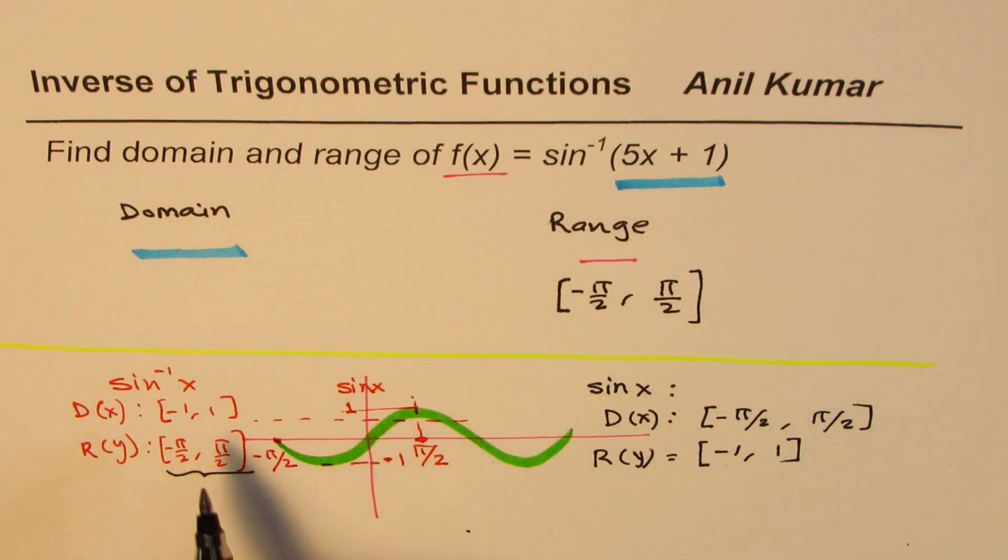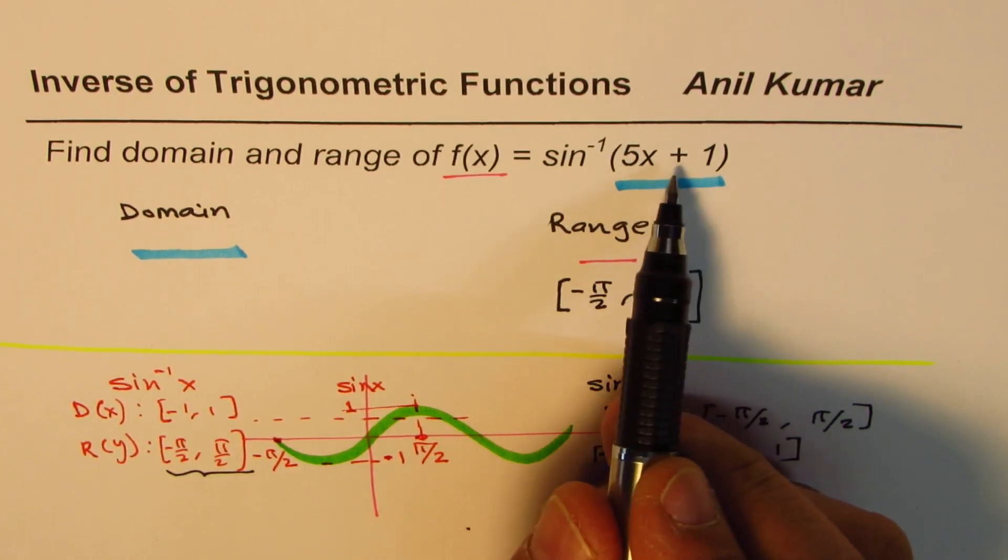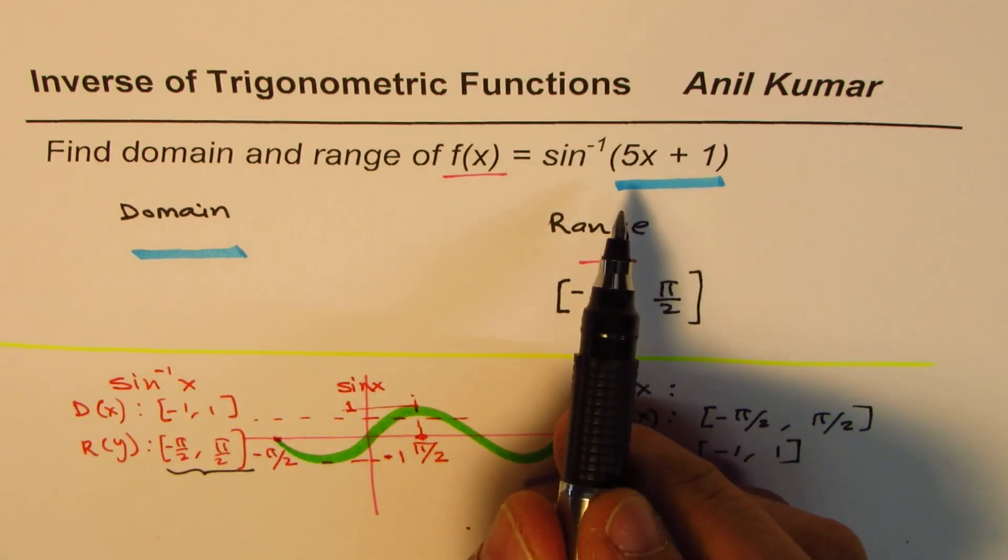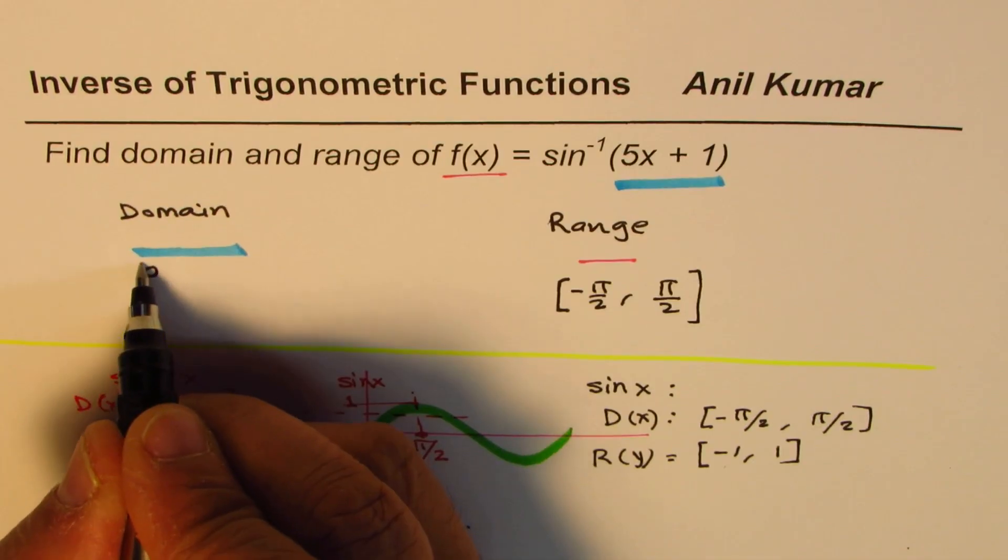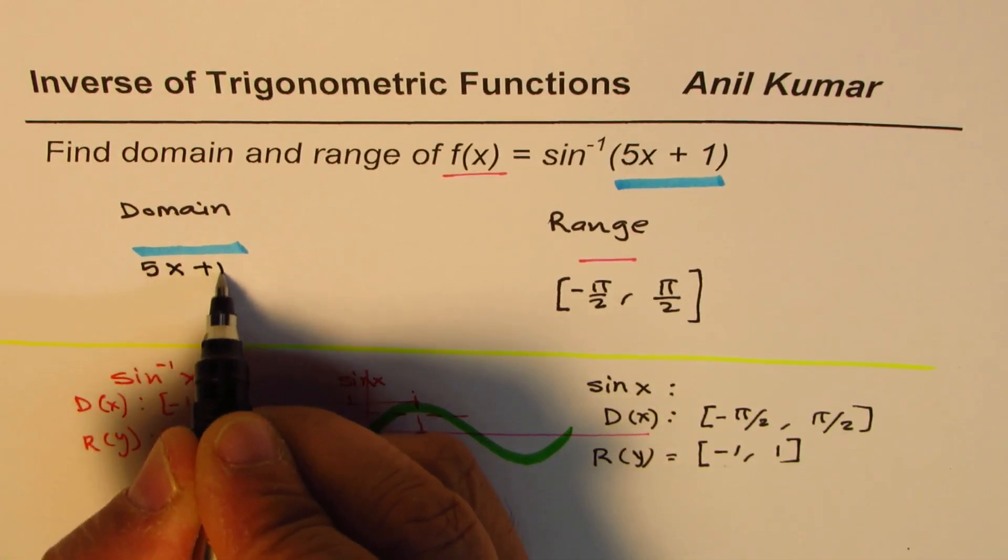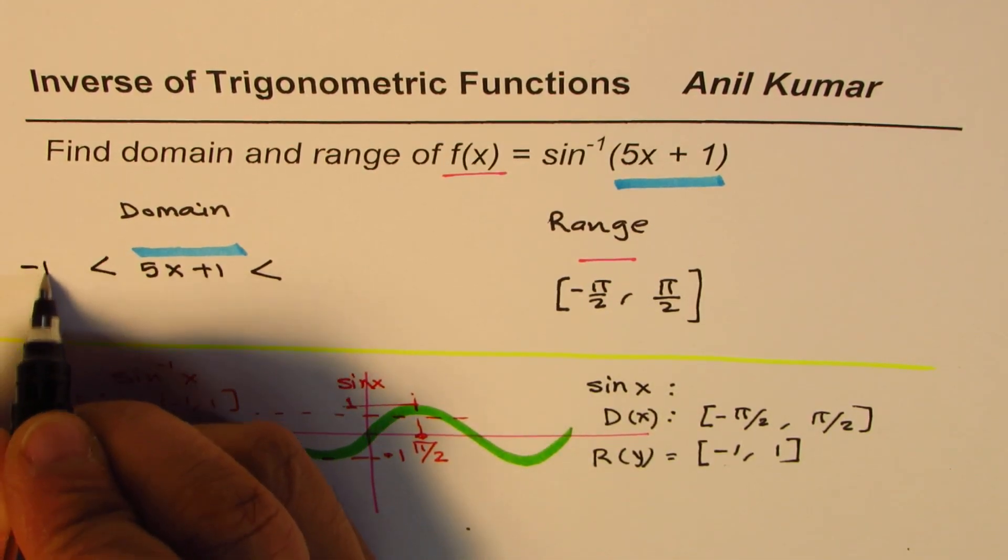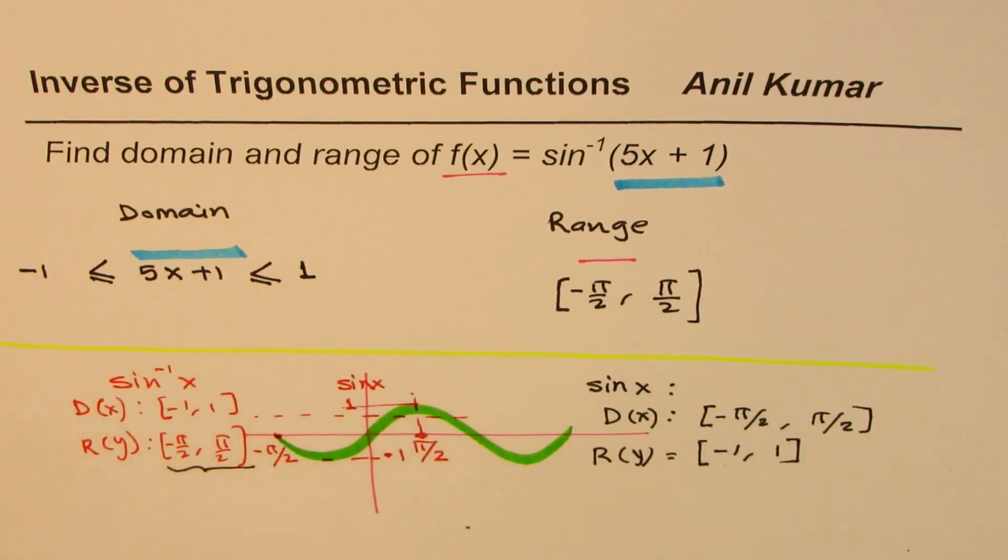Now, we have to find the domain. For the domain, the function has been transformed. Therefore, we know this value is between minus 1 and plus 1. So we need to find what exactly it is. So basically, we could calculate like this. We have 5x plus 1, and this value should be between minus 1, both included, and plus 1. So we have to solve this inequality to really get the result.